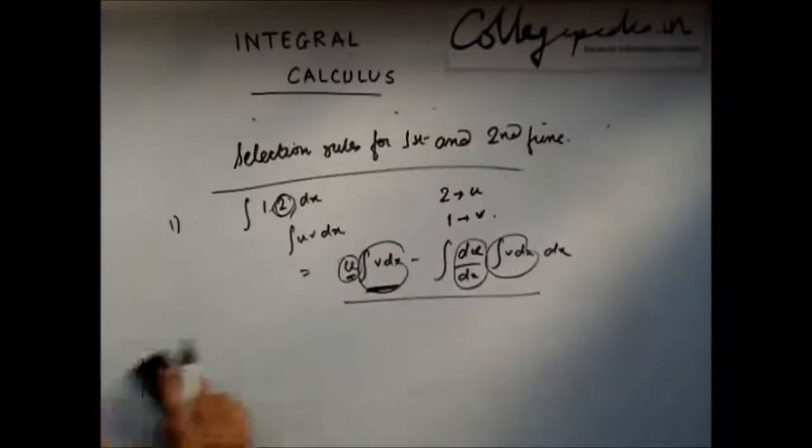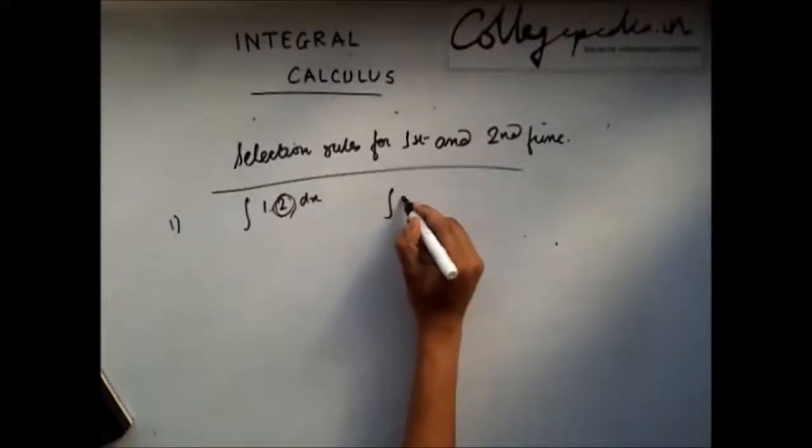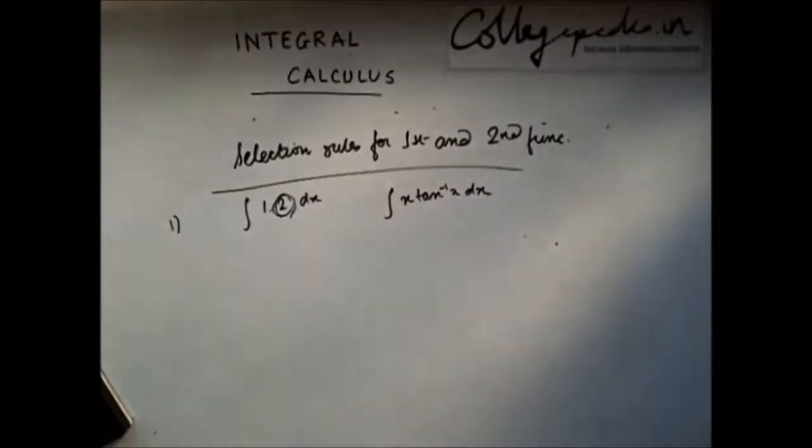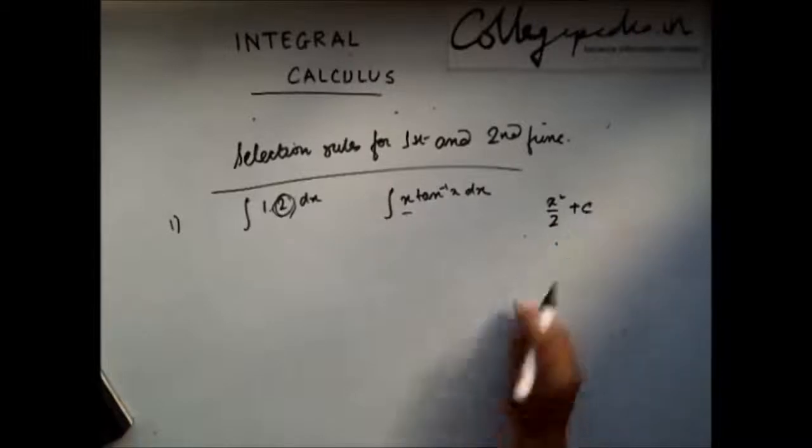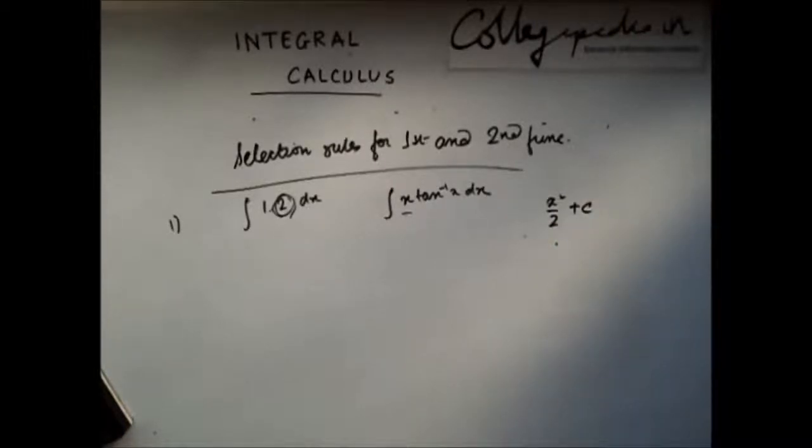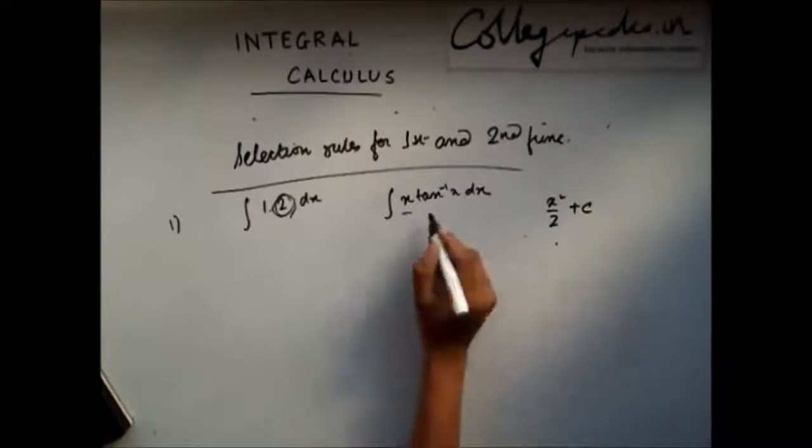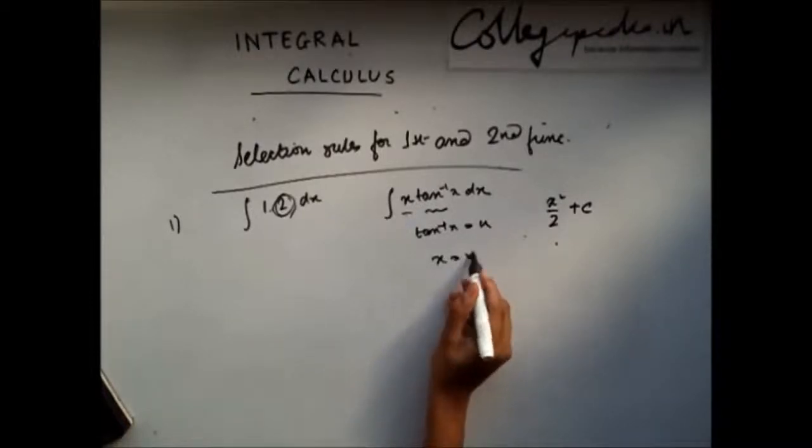An example could be, let us say we are asked to integrate x·tan⁻¹(x). Now, here you can see that you can integrate x. You know that if you integrate x, you will get x²/2 plus c. But tan⁻¹(x) is directly not integrable. So, which is not integrable, we take it as the first function. So my first function is tan⁻¹(x). I will take it as u and x I will take it as v.